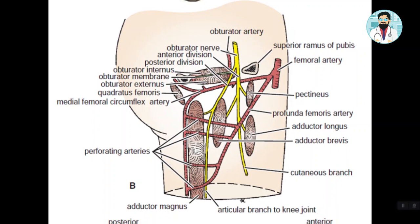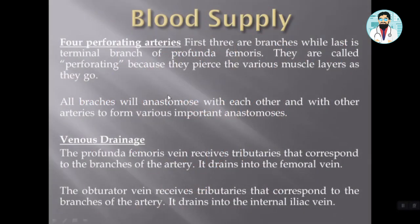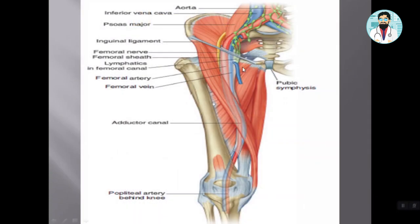When we talk about venous drainage: just as you have the obturator artery, you also have the obturator vein; just as you have the profunda femoris artery, you also have the profunda femoris vein. The venous tributaries correspond to the arteries. This completes the blood supply of the medial compartment.